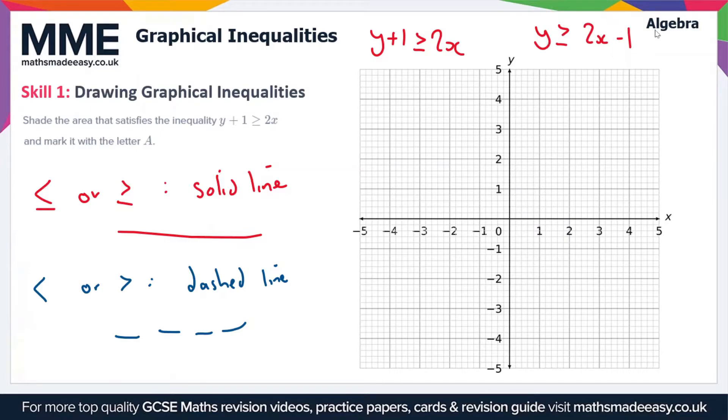Now this is similar to the form y = mx + c except the equal sign is the inequality sign. As this is an inclusive inequality, we're going to use a solid line here and we're just going to draw the line y = 2x - 1.